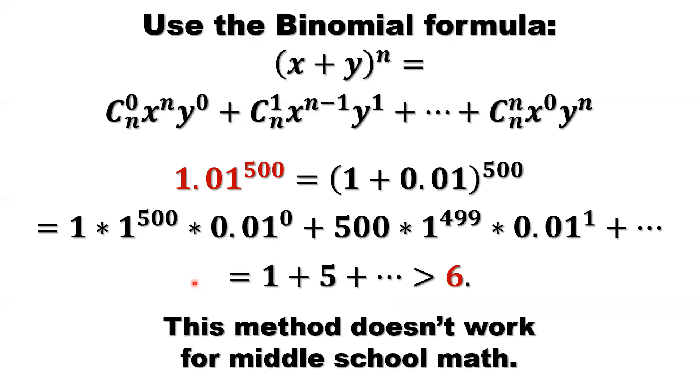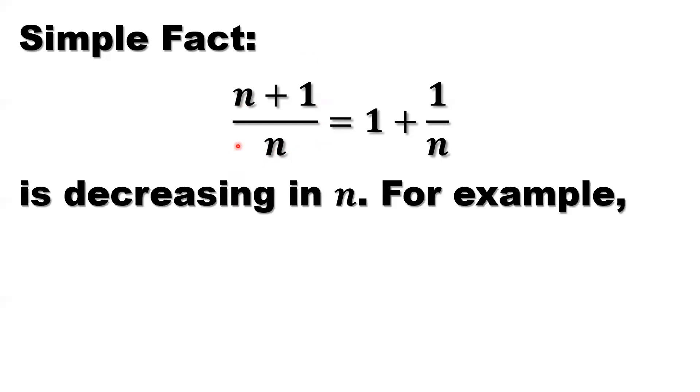Let's consider a simple fact. The ratio of two consecutive numbers - n plus 1 over n - the two numbers, the difference is 1. So we call it consecutive numbers. The ratio of two consecutive numbers equals n divided by n is 1, 1 over n is 1 over n. So here, look at the second part. When n is increasing, the ratio is decreasing. This is decreasing in n.